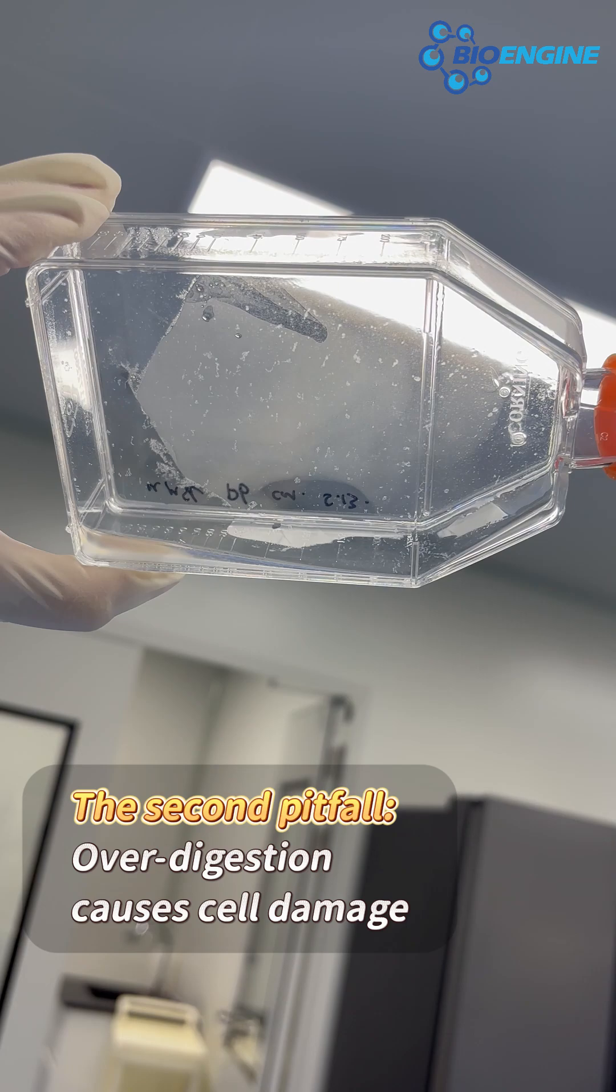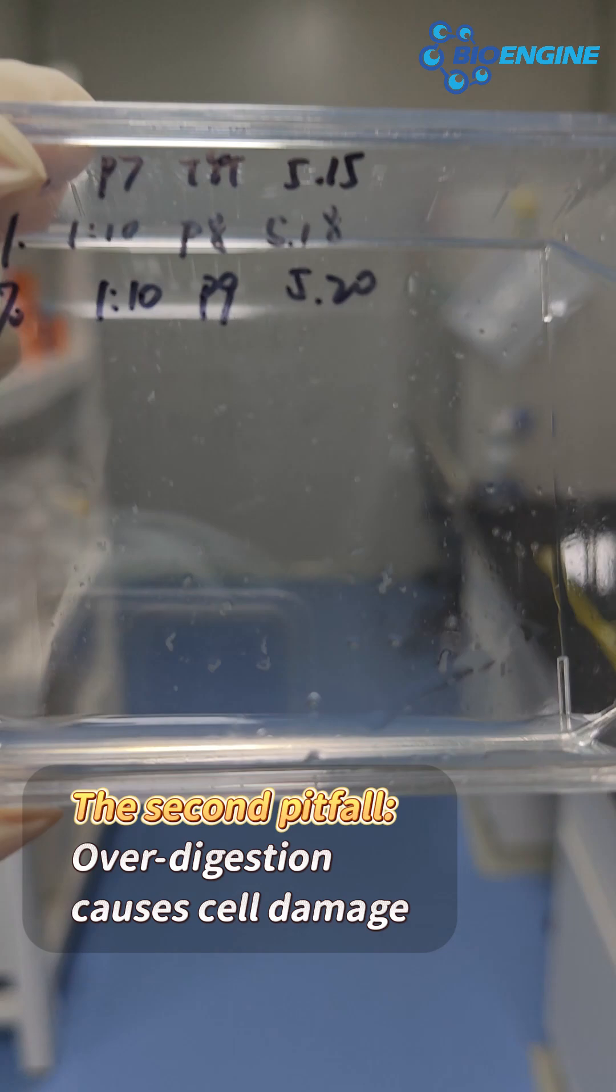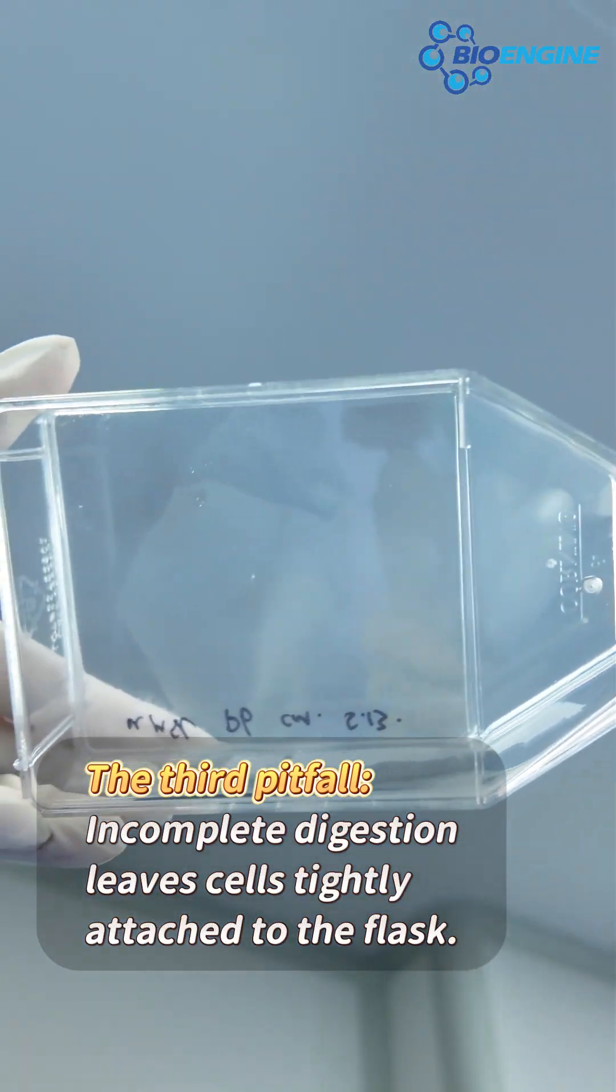The second pitfall: over digestion causes cell damage. The third pitfall: incomplete digestion leaves cells tightly attached to the flask.